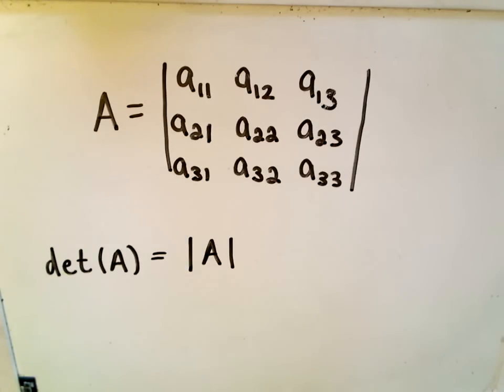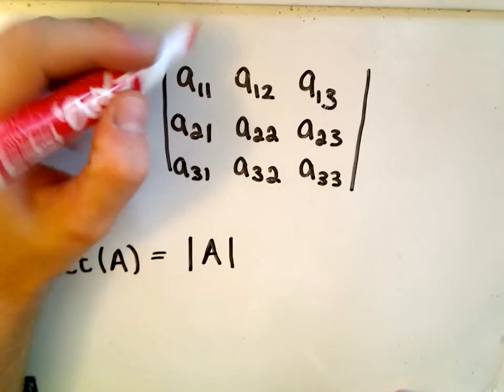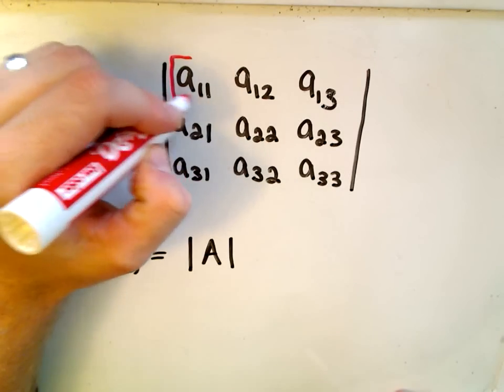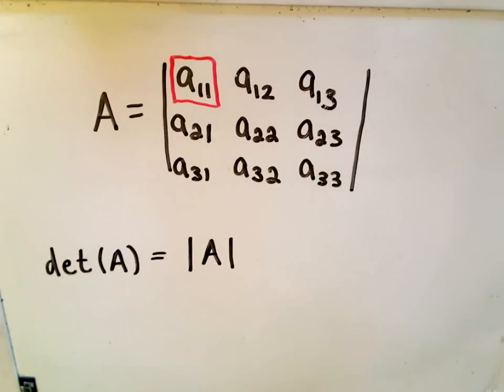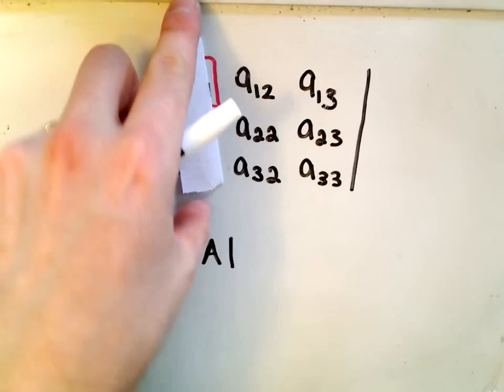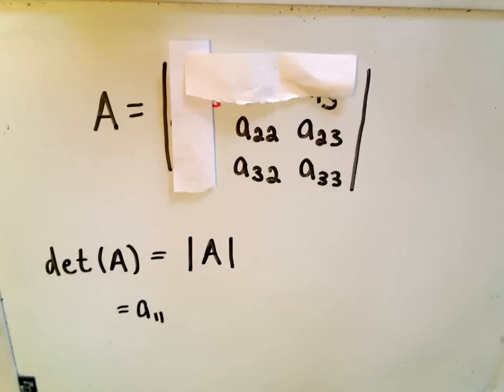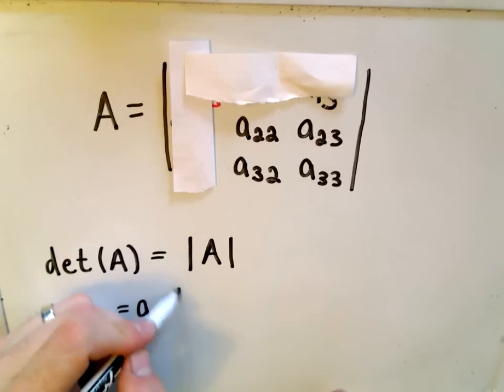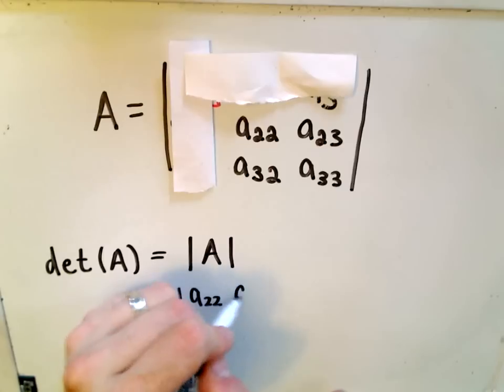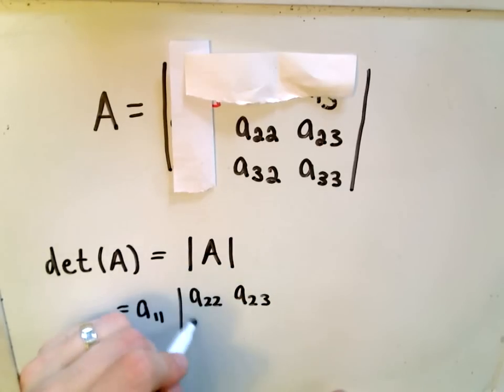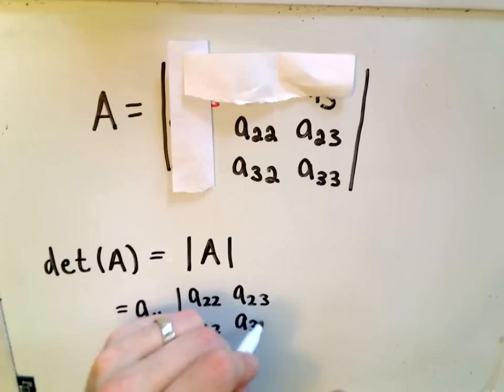To compute the determinant of a 3x3 matrix, you look at the entries along the top row. The formula is: you take that term A₁₁, and imagine canceling out that column and that row. What am I left with? I'm left with a smaller matrix: A₂₂, A₂₃, A₃₂, A₃₃.